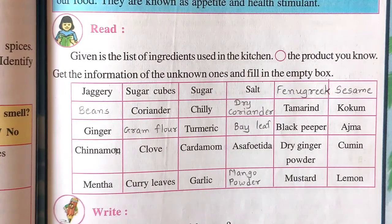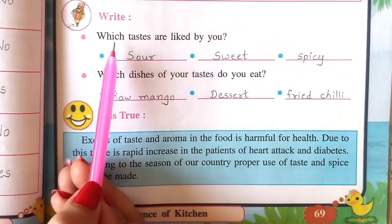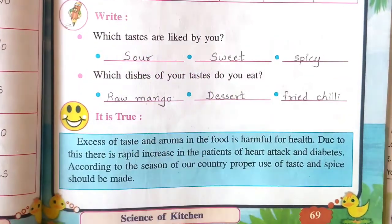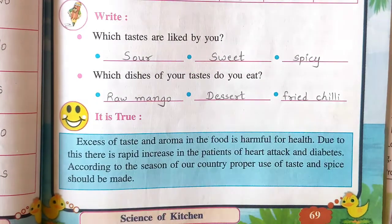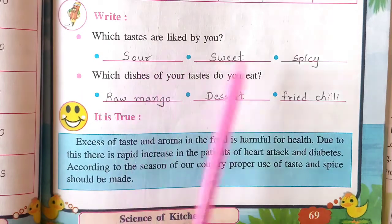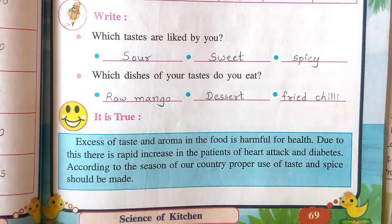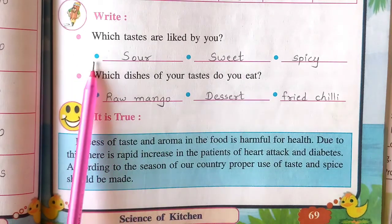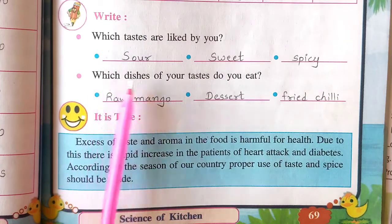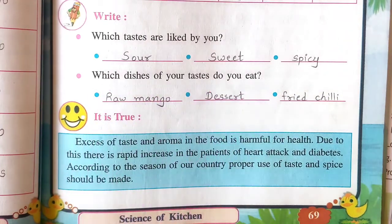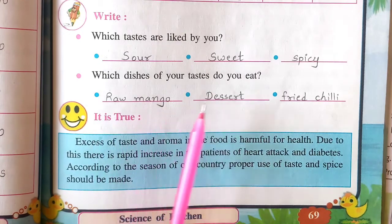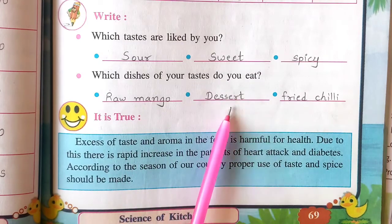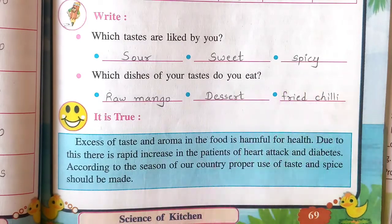You fill up the empty boxes and put a circle on the products you know. Which tastes are liked by you? Write them here. I have written sour, sweet and spicy because I like these tastes. Then, which dishes of your taste do you eat? I eat raw mango as sour taste, dessert as sweet taste and fried chili as spicy taste. You can write according to your own taste.